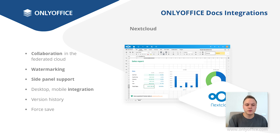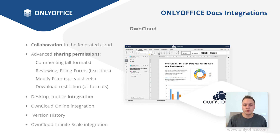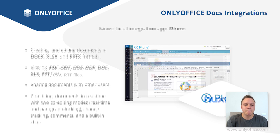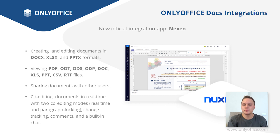Now some important integration news. In Nextcloud, you can collaborate between federated clouds, make use of Nextcloud's side panel while editing to add chat messages, instantly share documents, browse version history, apply watermarks, and force save your documents. Federated cloud collaboration is also available for OwnCloud users — you can use the full range of advanced sharing permissions, version history, and the ability to use OnlyOffice in OwnCloud Online and in OwnCloud Infinite Scale, an exciting new project with new architecture for unlimited scalability. Our fresh integrations include Plone, an open source ECM commonly used in intranets and for web presence of large enterprises with high profile in the public sector, and Nuxeo, an open source content management system from France written in Java, which has found a space of interest in Europe and North America.